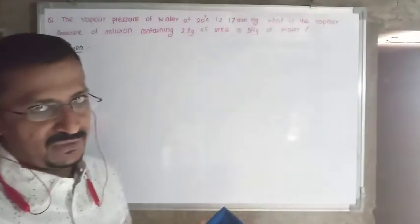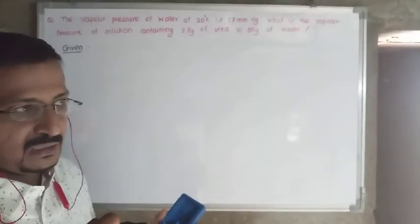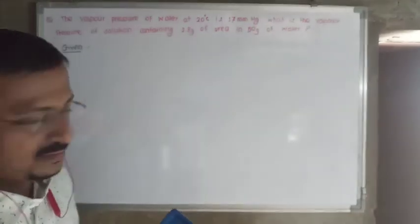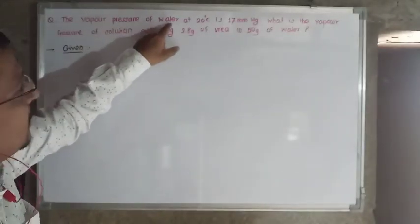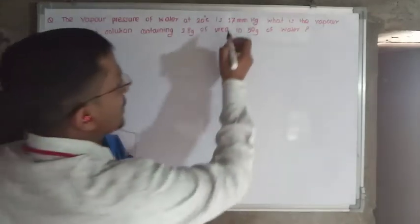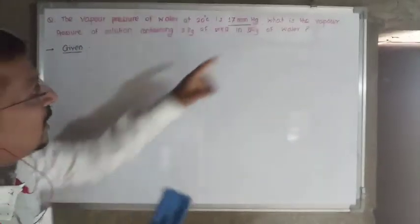This is the first example from your textbook exercise: the vapor pressure of water at 20 degrees Celsius is 17 millimeters of mercury. What is the vapor pressure of a solution containing 2.8 grams of urea in 50 grams of water? Whenever solving examples, first read the problem sentence by sentence and write the given data accurately. The vapor pressure of water at 20 degrees Celsius is 17 mm of Hg.